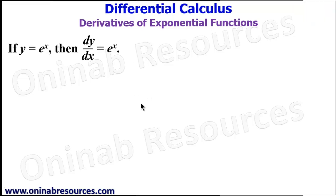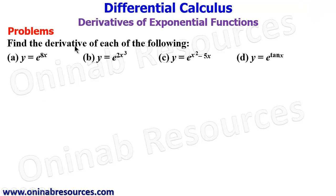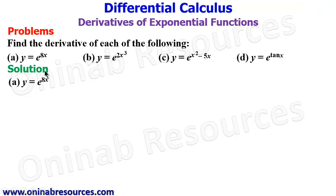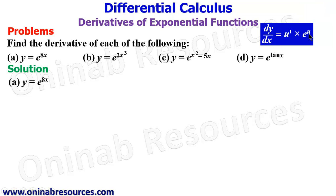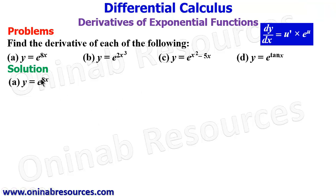We'll look at some problems here: find the derivative of each of the following — we have a, b, c, and d. Starting the solution from a: this is a function of a function. It would have just been e raised to power x, but now we have 8x, so we are going to be applying the chain rule. With this, dy/dx will be u prime multiplied by e raised to power u.